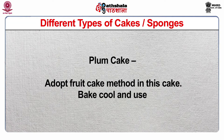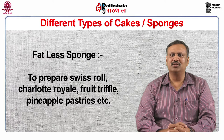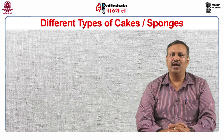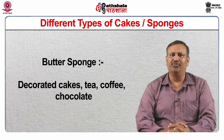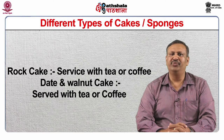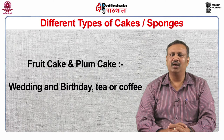Plum cake: adopt the fruit cake method in this cake, bake, cool and use. The utility of fat-less sponge includes preparation of Swiss roll, charlotte royal, fruit truffle, pineapple pastries, etc. Genoise sponge is used for different types of gateaux and petite fours. Butter sponge can be used for decorated cakes for tea or coffee. Chocolate sponge is used for making cake rusk. Madeira cake is used for making Madeira cake rusk. Fruit sponge is basically used for birthday cakes. Rock cakes are served with tea or coffee. Date and walnut cake is served with tea or coffee. Fruit cake and plum cakes are basically served during weddings and birthdays and also with tea and coffee.